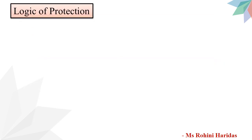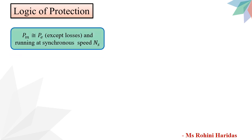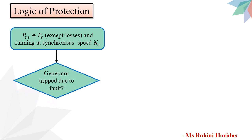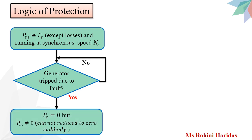Now let us see the logic behind the protection against overspeeding. Let us consider that the alternator is supplying its rated electrical power PE to the grid, and its mechanical input PM is nearly equal to PE, and the machine is running at constant synchronous speed. Now consider that due to some fault, the generator is tripped and disconnected from the grid. So PE, that is electrical power, will be equal to 0.